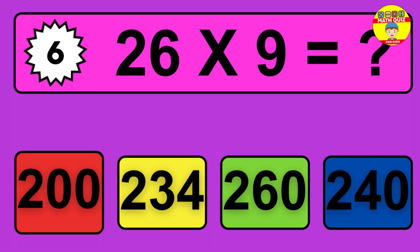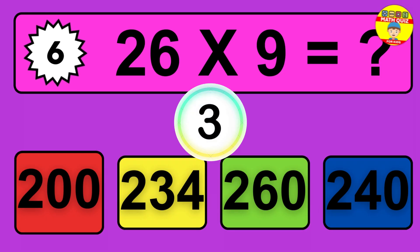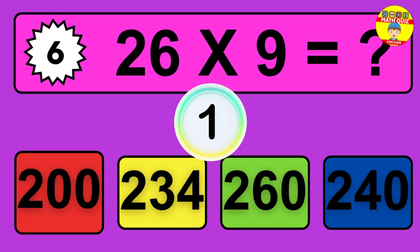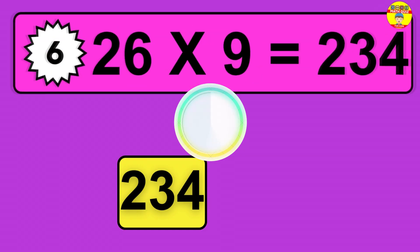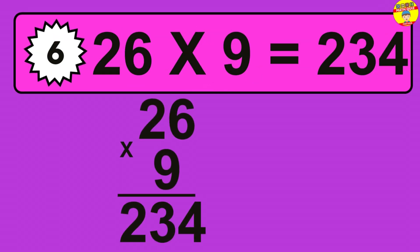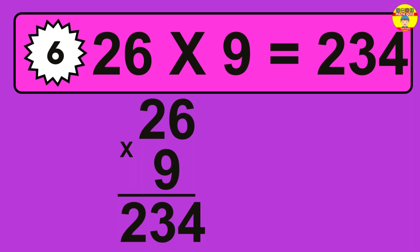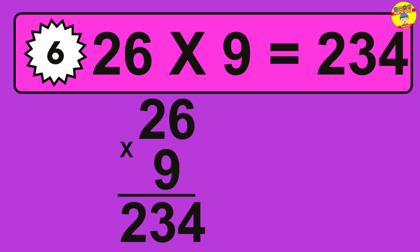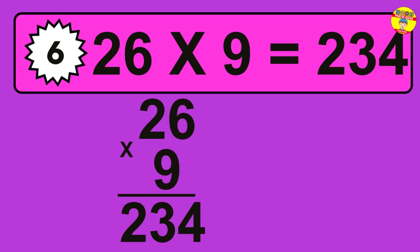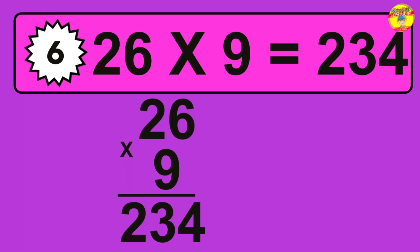Question 6. 26 times 9 equals what? The answer is 26 times 9 is 234. To calculate, we have 26 groups with 9 balls each one. So, how many balls do we have? 234 balls.